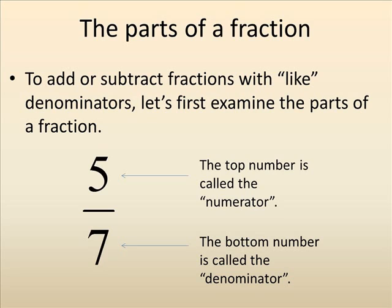First, let's look at the parts of a fraction. We can see the fraction 5 sevenths, or 5 over 7. The top number, which is 5, is called the numerator. The bottom number, 7, is called the denominator.